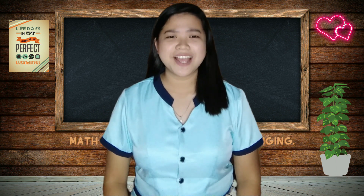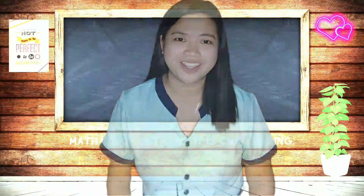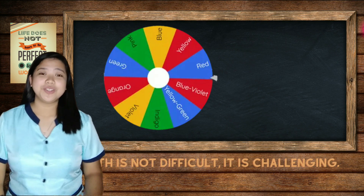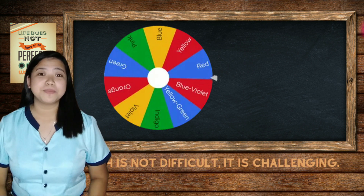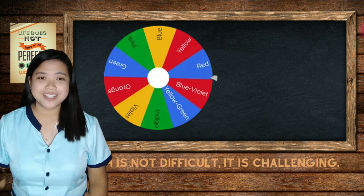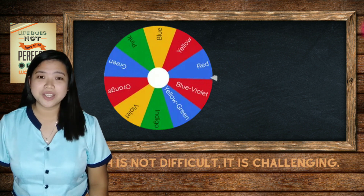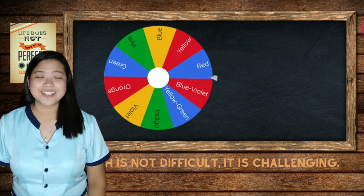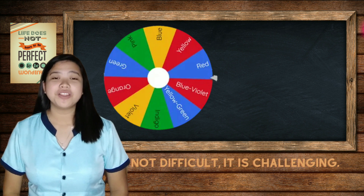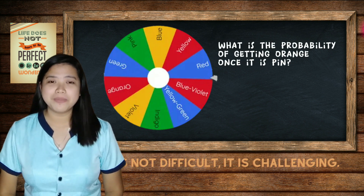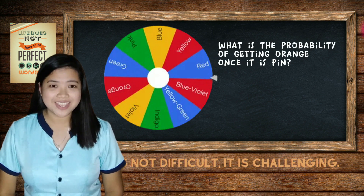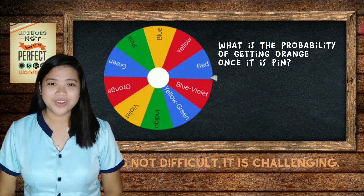Now we will proceed to a new topic. But before that, let's have a warm-up activity. As you can see, we have here a wheel spinner, and it consists of 10 colors. We all know that a wheel spinner selects randomly. So, based on the figure, what do you think is the probability of getting an orange color once we spin the wheel?